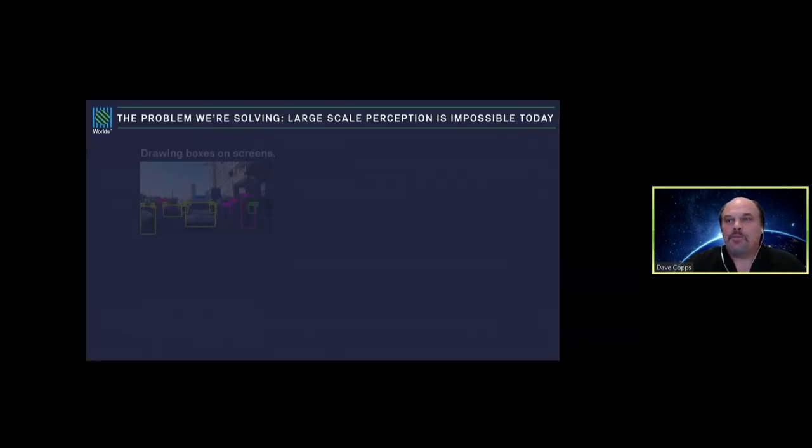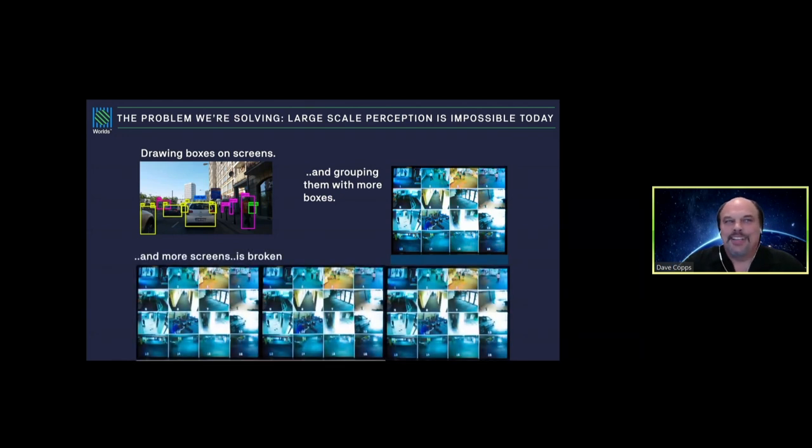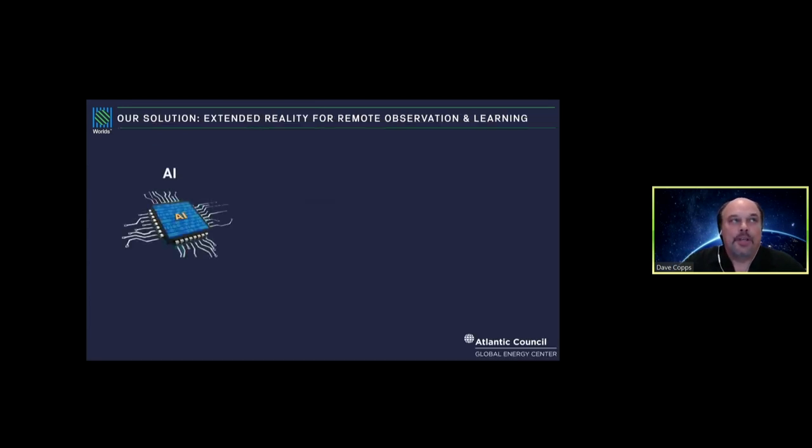At Worlds, the problems we're solving: you've probably seen people drawing boxes on screens teaching AI to learn things. With security systems, we have cameras, multiple cameras on a screen, multiple screens with multiple cameras. That just doesn't work. It's a reactive system, it doesn't do anything. That's the state of the art: you wait for something to break and go wrong and go check it out. We think there's a better way.